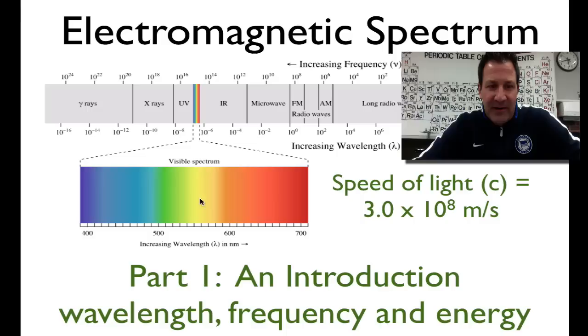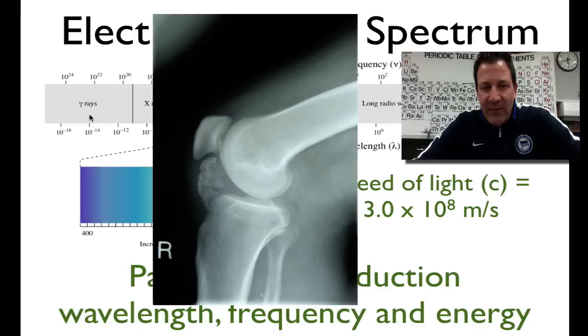So these are gamma rays, very short wavelength. One kind that you may be familiar with is the X-ray. And this is an X-ray of somebody's knee. X-rays are used to take X-rays.